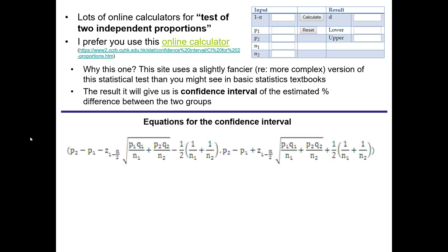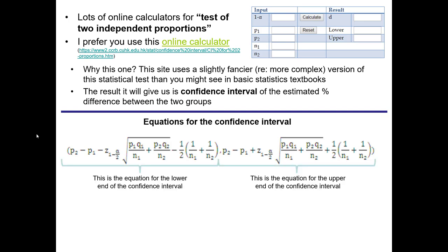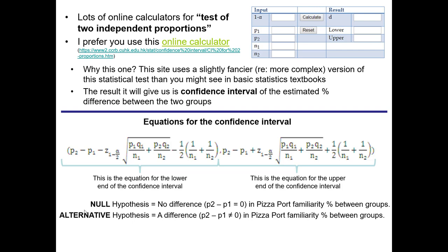Here are the underlying equations the calculator will do for us. They look daunting but on close inspection they're not so bad — many of those numbers are quite redundant. The equation on the left gives us the lower end of the confidence interval for our difference in percentage estimate, and the equation on the right gives us the upper end. Restated more technically: the null hypothesis is P2 minus P1 equals 0 (no difference in Pizza Port familiarity), and the alternative is P2 minus P1 does not equal 0.